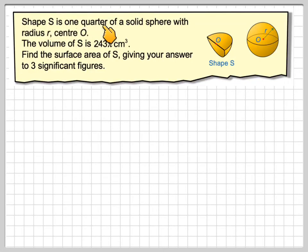Shape S is one quarter of a solid sphere with radius r, center O. Here we have a quarter of a sphere, center O, and here we have the actual sphere that it's cut from with radius r. We're told the volume of S, so the volume of the quarter of a sphere, is 243π centimeters cubed. We need to find the surface area of S, giving your answer to three significant figures.